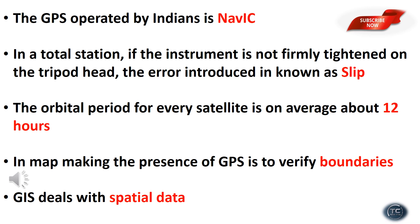The GPS system operated by India is NAVIC — Navigation with Indian Constellation. In a total station, if the instrument is not firmly tightened on the tripod head, the error introduced is called slip. The orbital period for every GPS satellite is on average 12 hours.